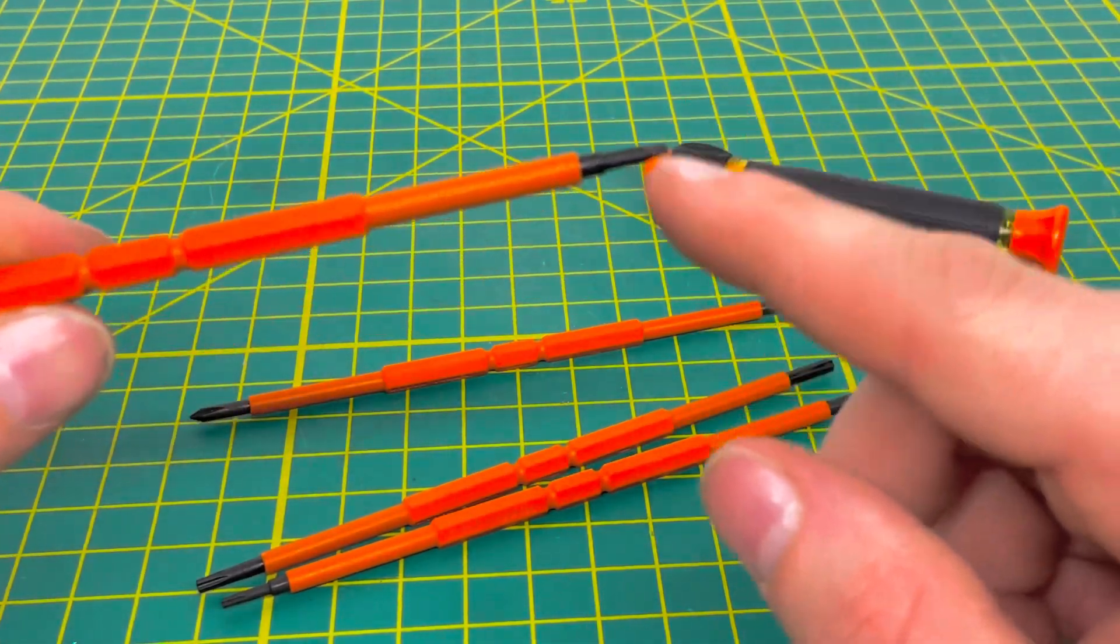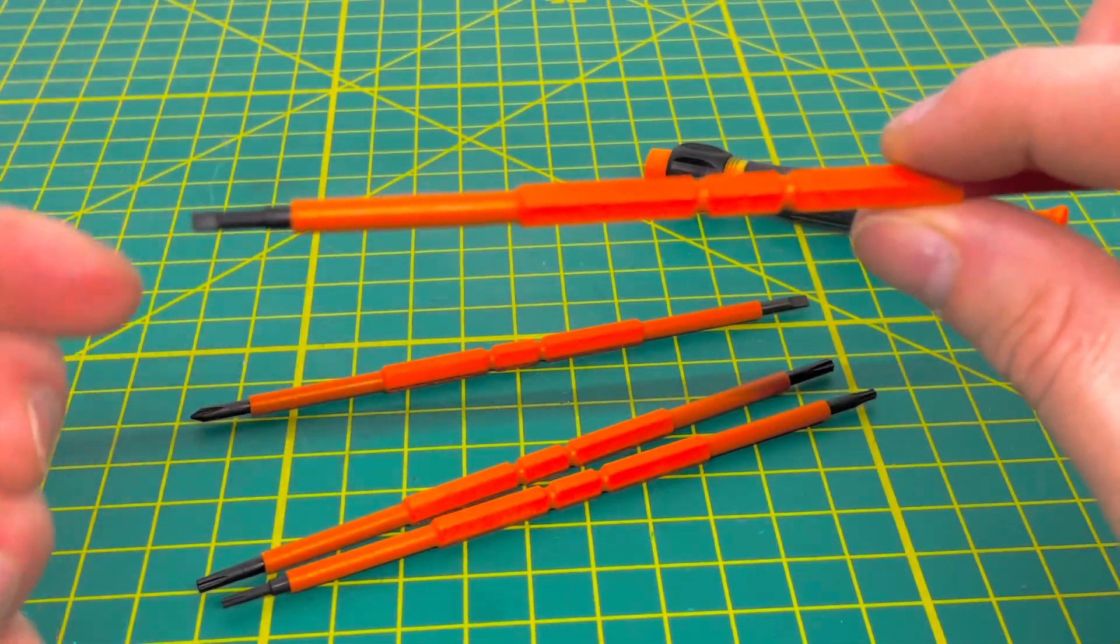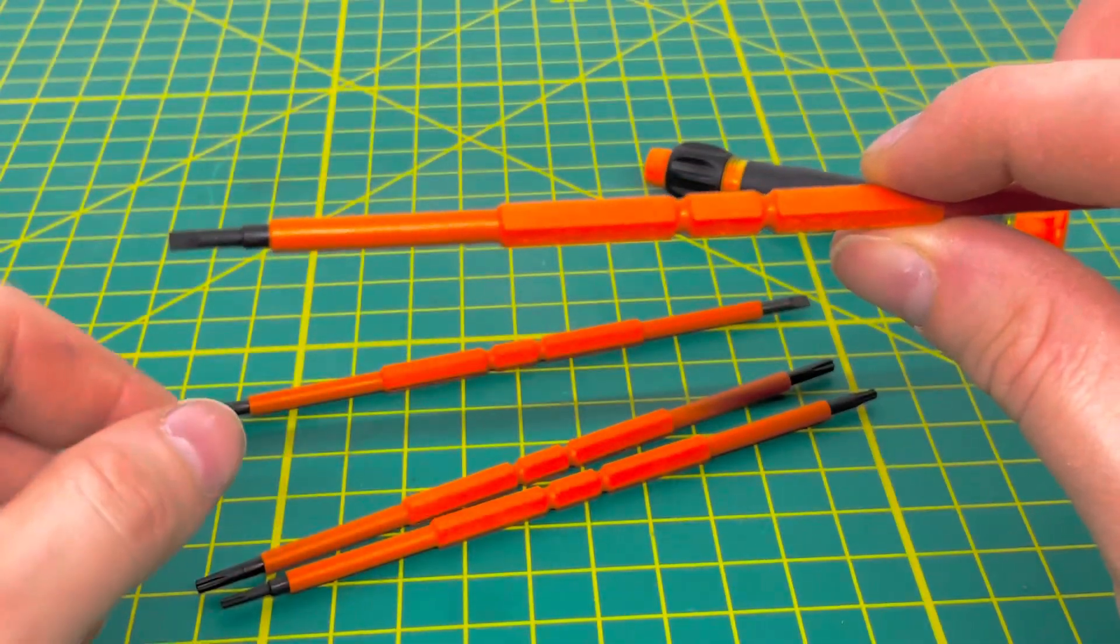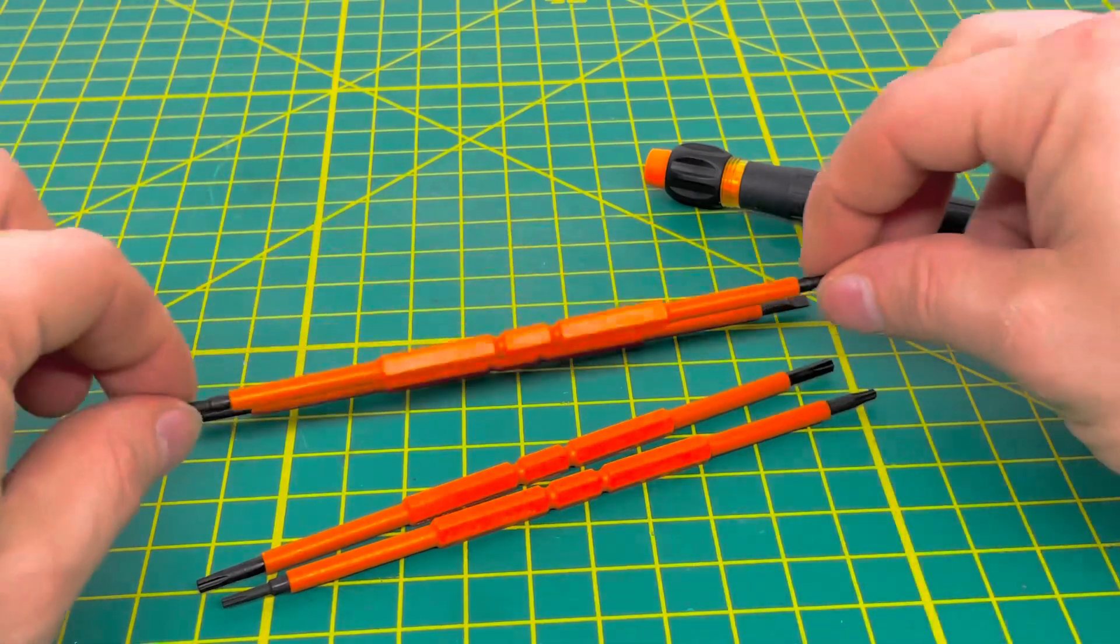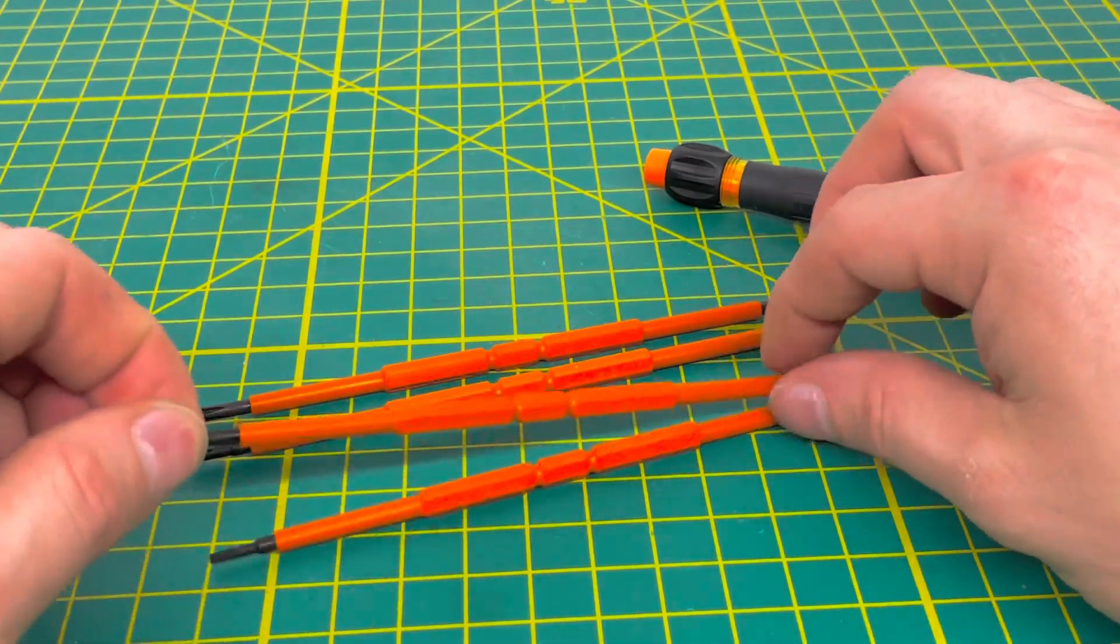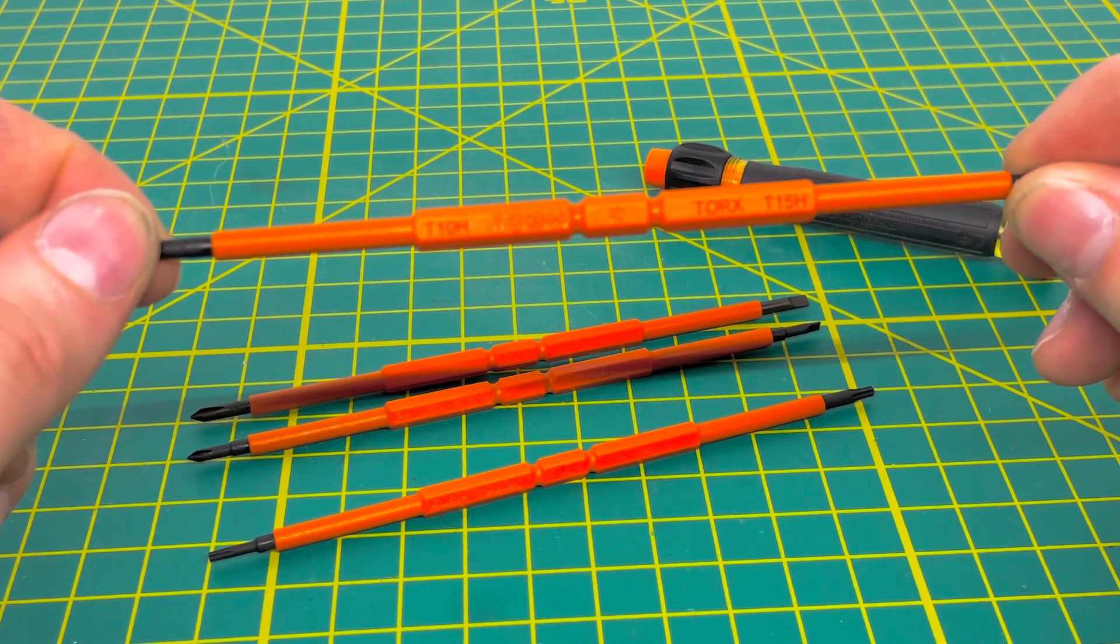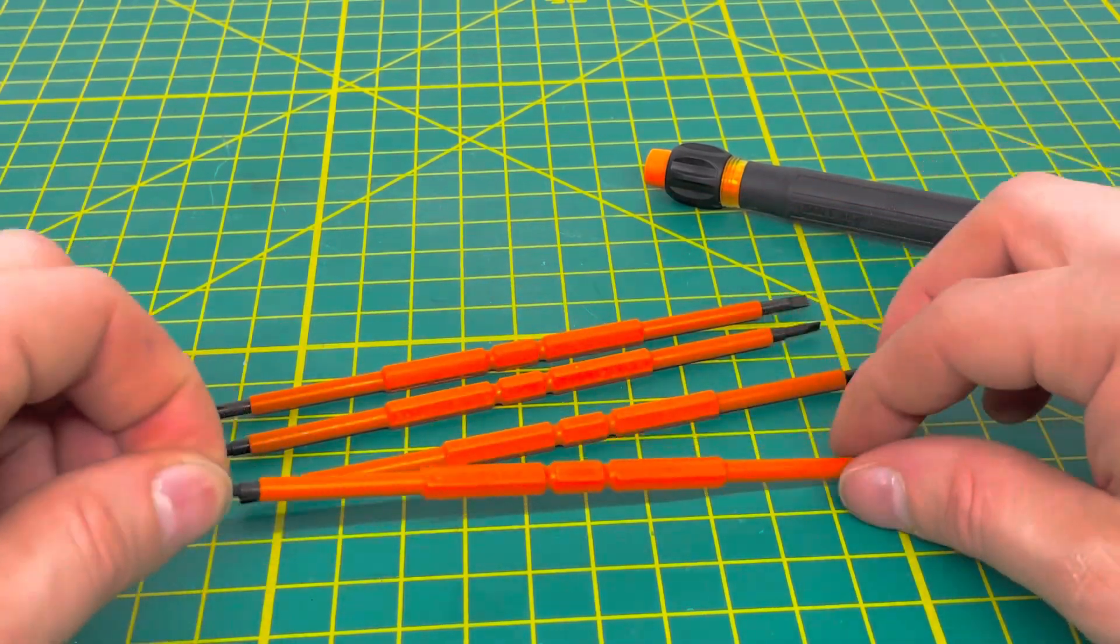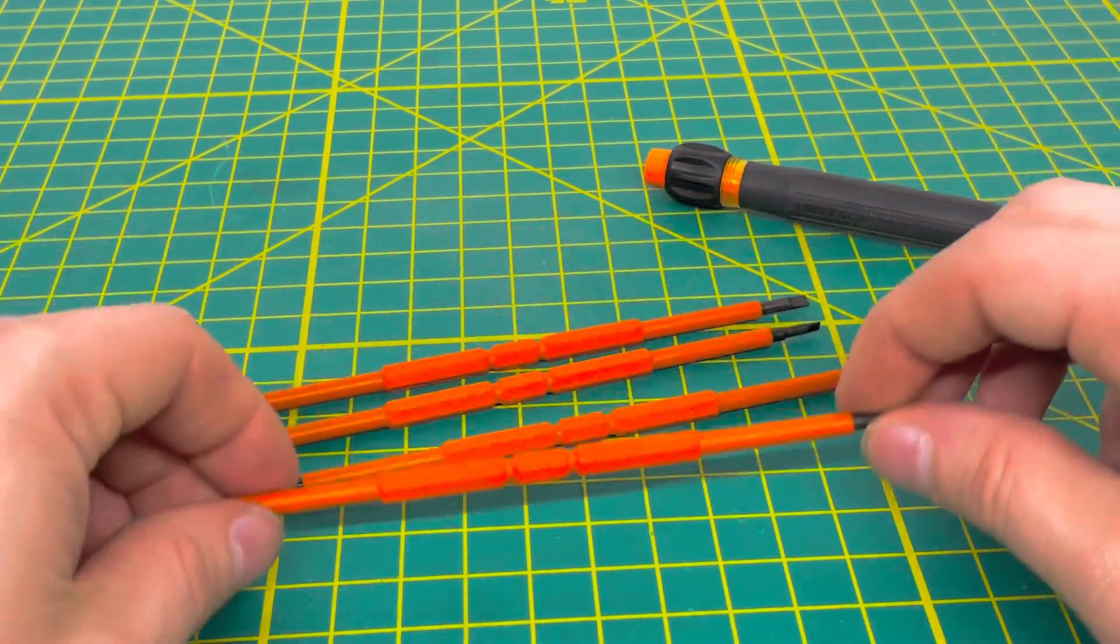This is probably my most commonly used size bit. When I'm doing thermostat work, this one is pretty common, so it'll be my most used one. Then you have your Torx bits. If you flip it over, this is your T10 and T15. This one is your T7 and T8 Torx bits.